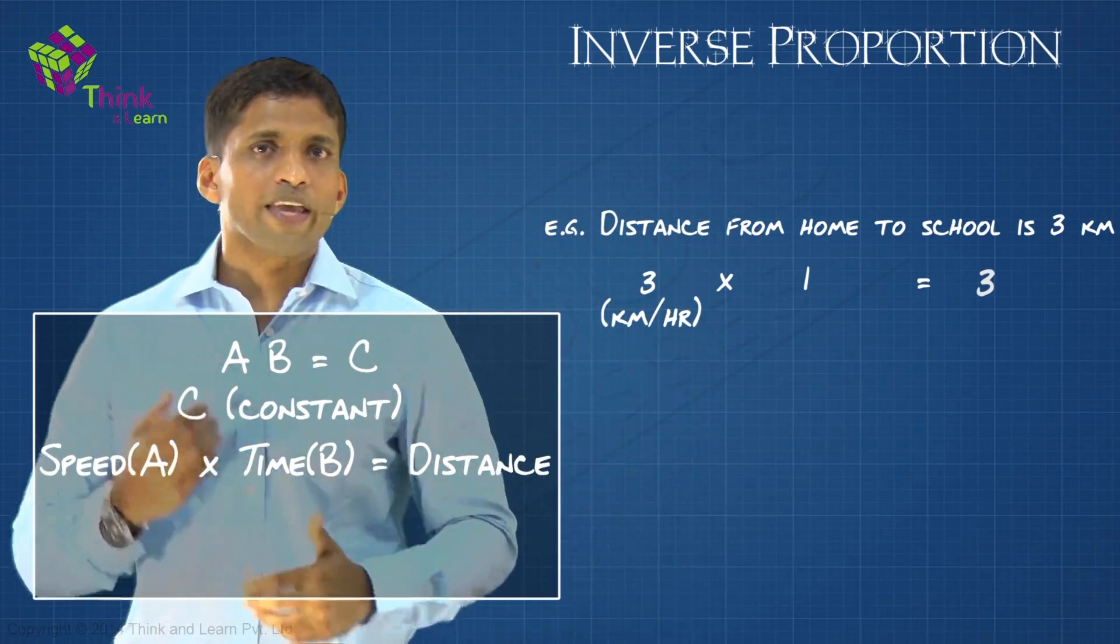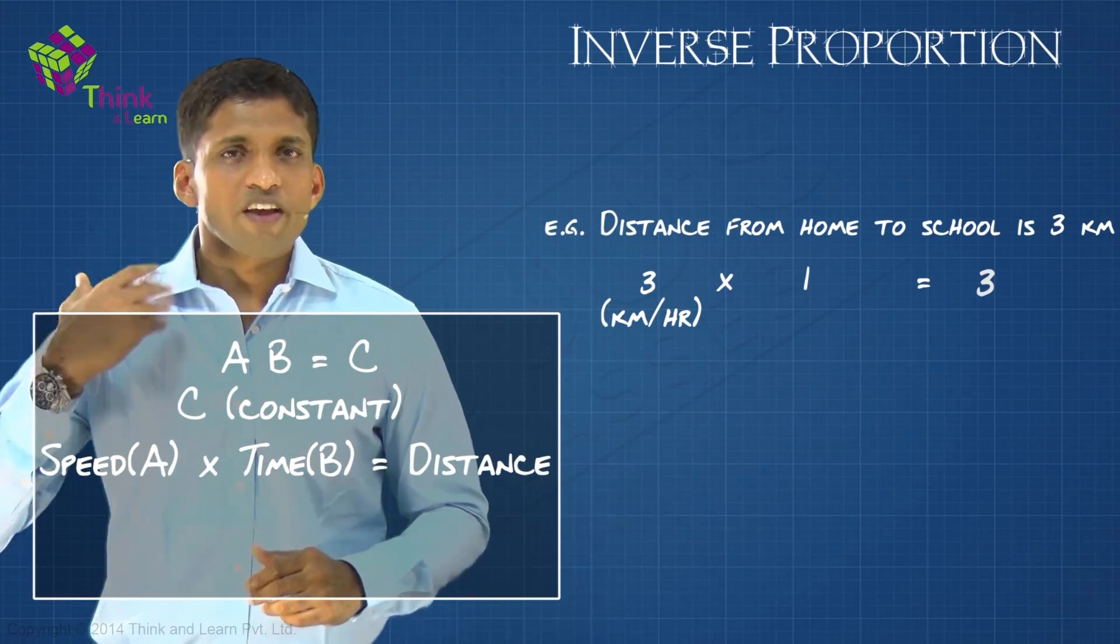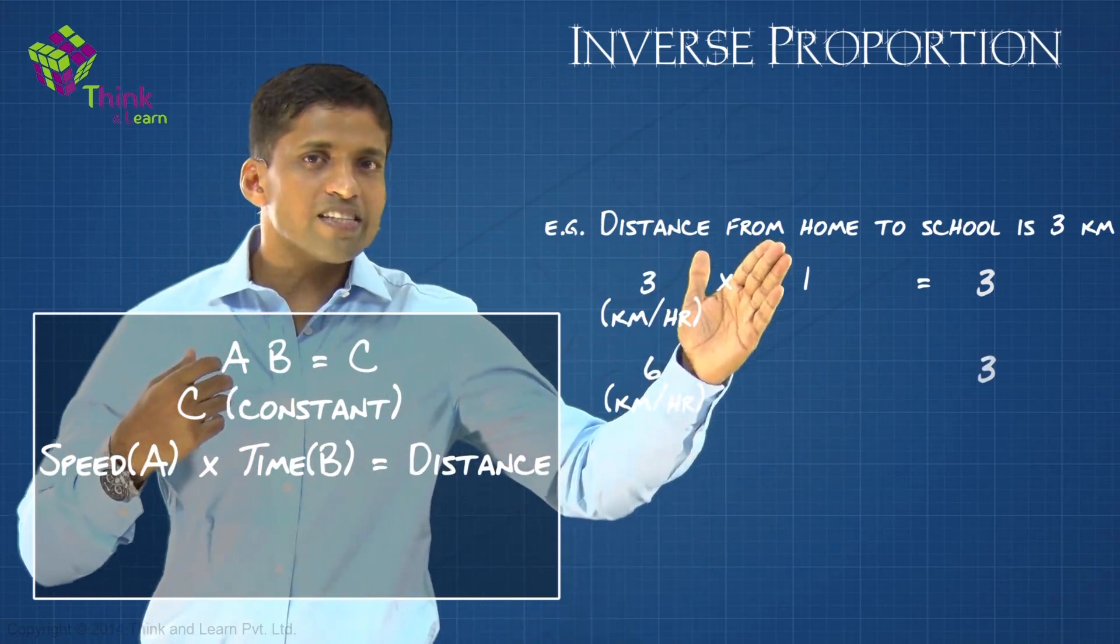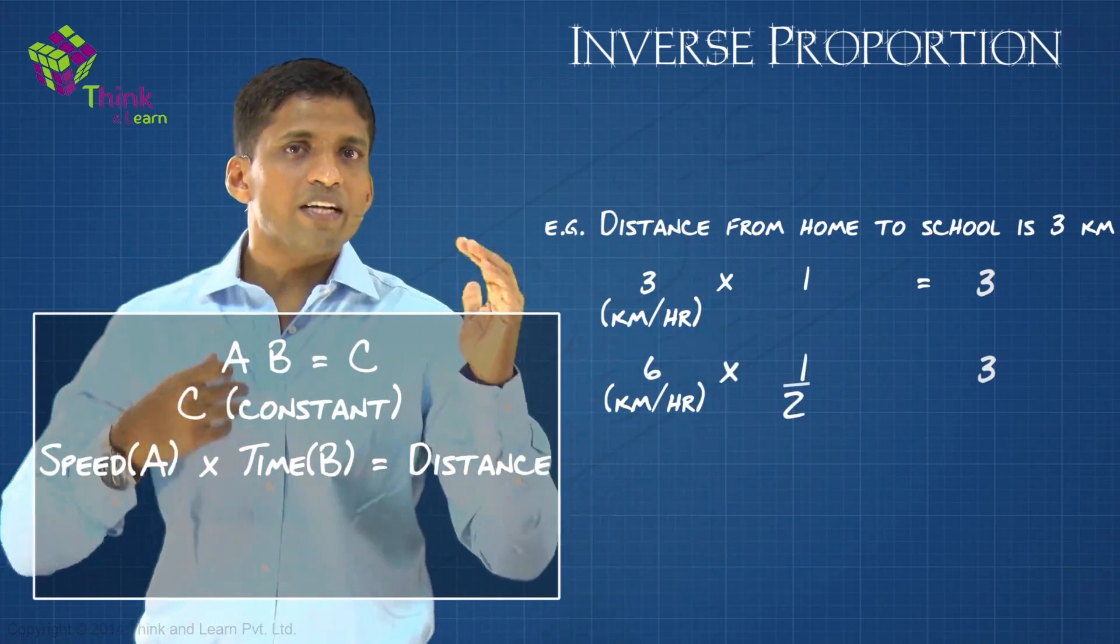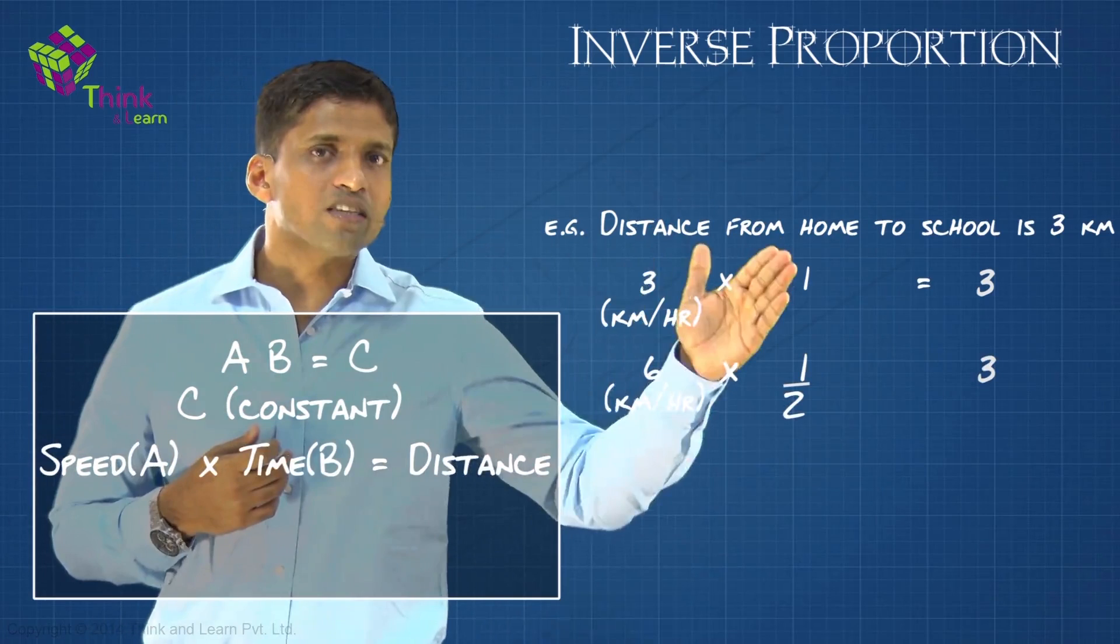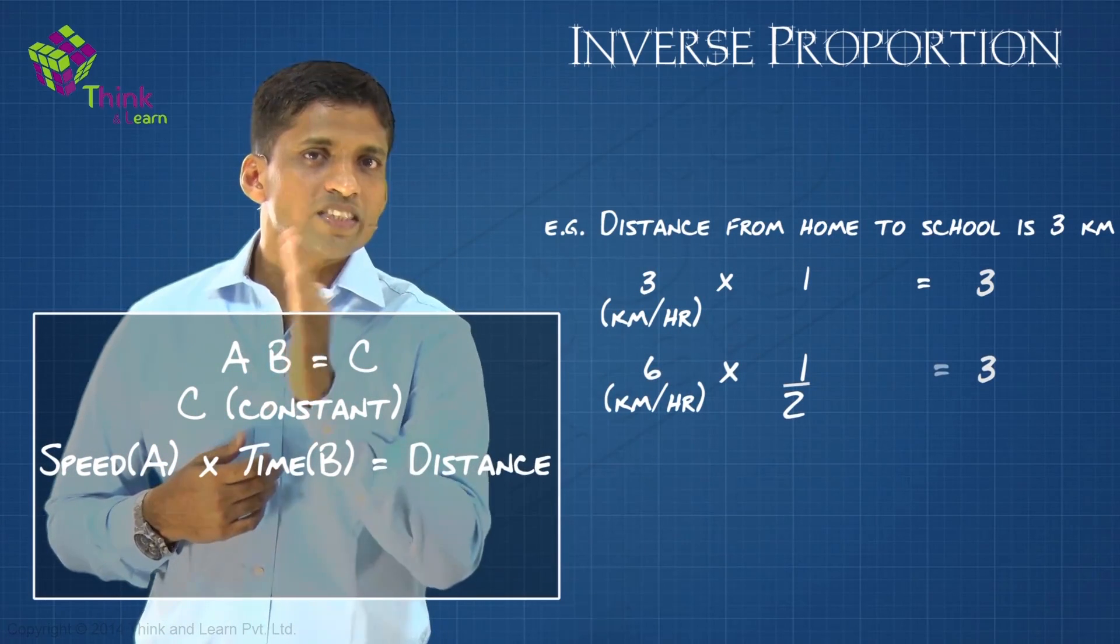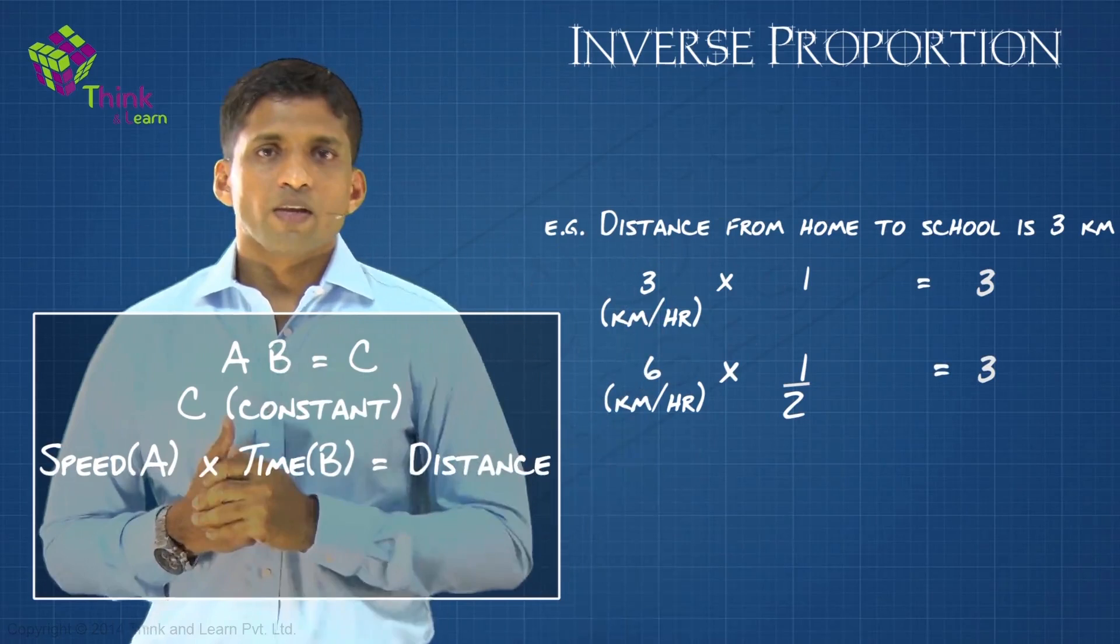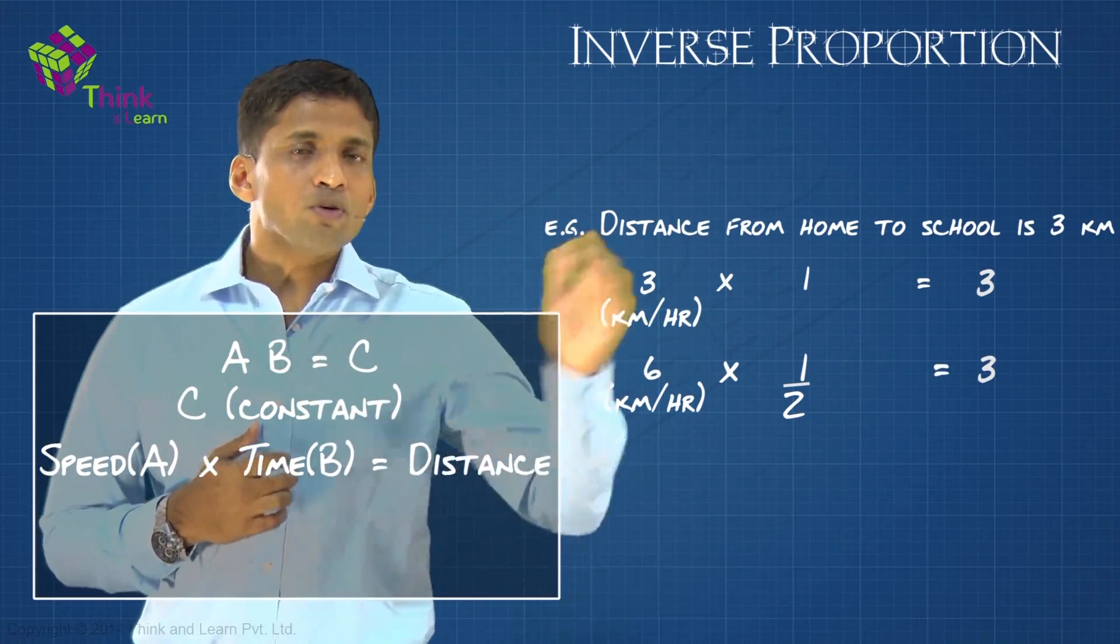Now, instead of walking, if you are running at 6 kilometers per hour, distance is still the same. So 6 into the time taken, you are supposed to get 3. What will be the time here? 6 into 1/2, you will get 3.